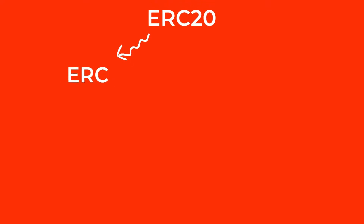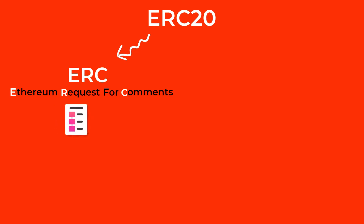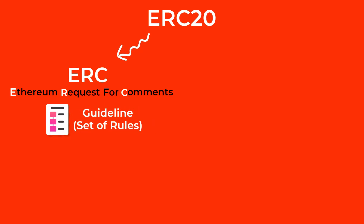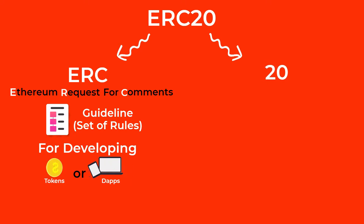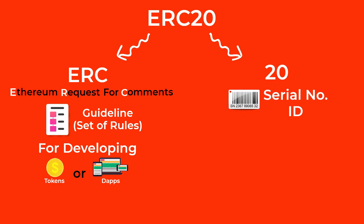Let's start with the name. ERC stands for Ethereum Requests for Comments, which may sound intimidating at first, but it is really simple. An ERC is a guideline or a set of rules developers follow while developing apps or tokens on the Ethereum blockchain. And 20 is the unique ID or serial number of the ERC.